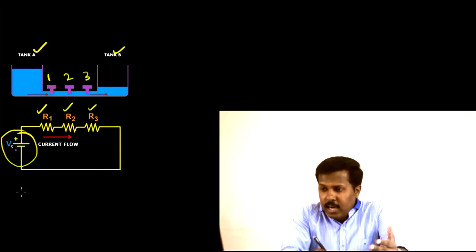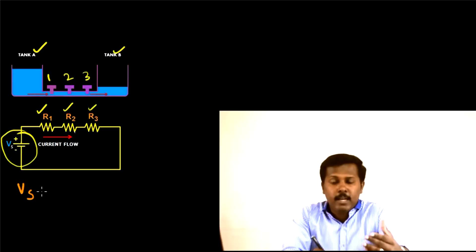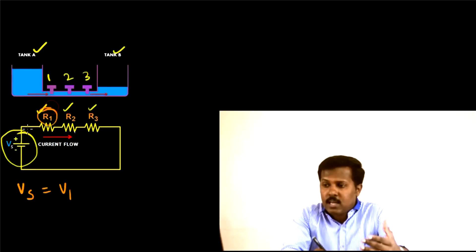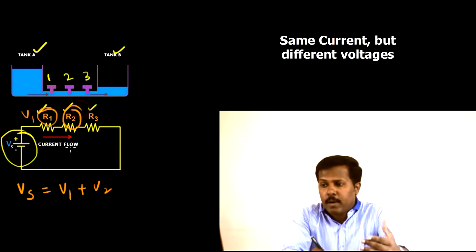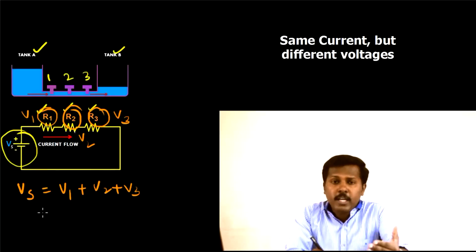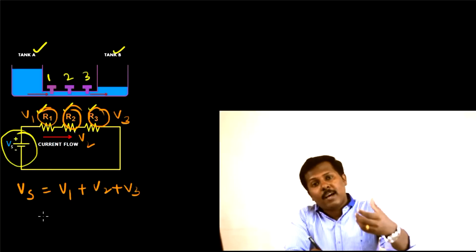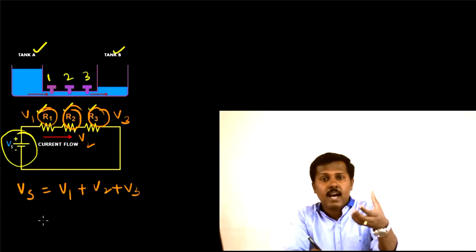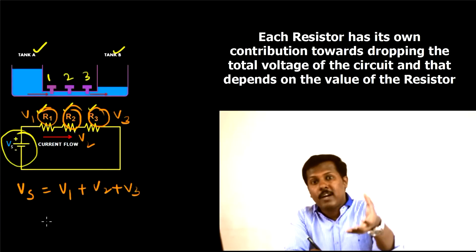We can see that the total voltage Vs — where subscript S denotes series connection — is equal to V1 plus V2 plus V3. Here, V1 is the voltage drop across resistor R1, V2 is the voltage drop across resistor R2, and V3 is the voltage drop across resistor R3. So the total voltage is dropped across R1, R2, and R3, meaning each resistor has its own contribution towards dropping the voltage.